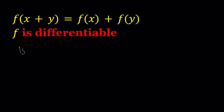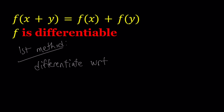Let's start with the first method. Our first method basically depends on differentiating both sides, first with respect to x, and then with respect to y. Differentiating with respect to x means that we treat y as a constant. I'm going to use 'wrt' for 'with respect to'. When I differentiate the left-hand side, I get f prime of x plus y. From the chain rule, the derivative of the inside is just 1. The right-hand side becomes f prime of x, but f of y is a constant.